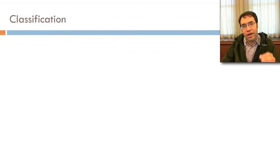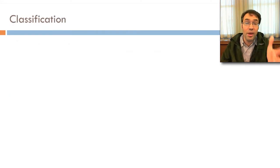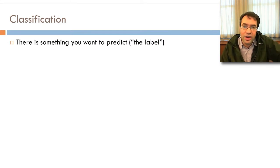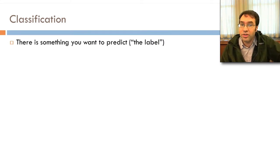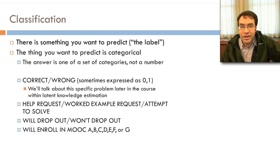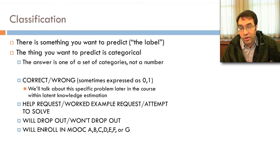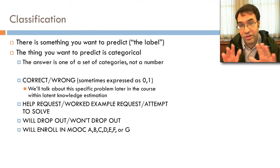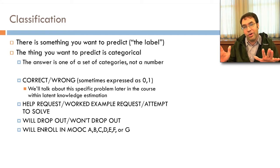In this class, we're going to talk about classification, which is a type of prediction model. Like any type of prediction, there's something you want to predict — the label. In classification, the thing you want to predict is categorical. The answer is one of a set of categories, not a number. It could actually be binary, 0 or 1, and that still gets treated as categorical data for this purpose.